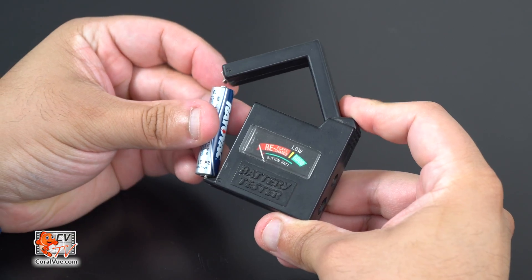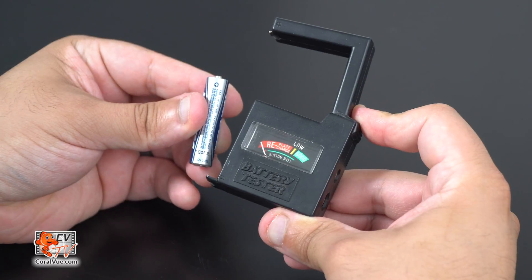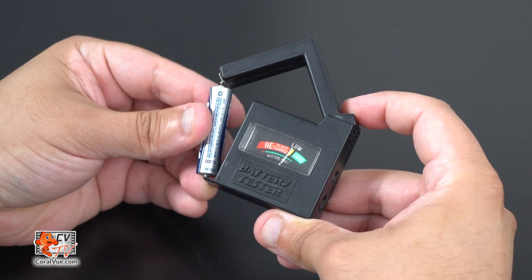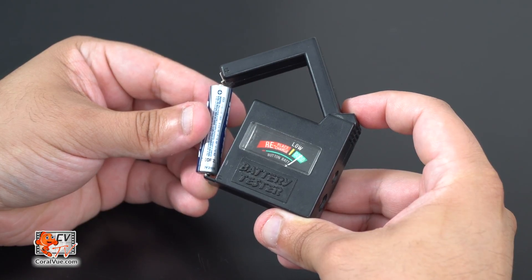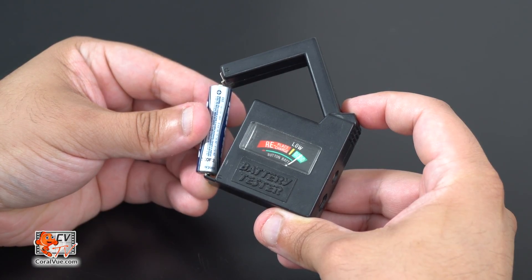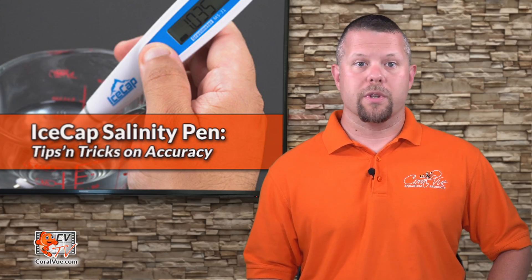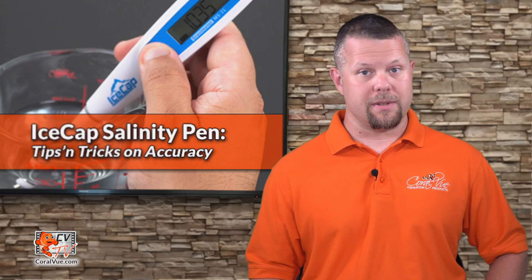A battery tester is a very inexpensive yet useful way of monitoring the life of your batteries for all your household devices. It will allow you to easily test the power left on the battery and replace it if needed. Charged batteries will ensure that the pen is accurate on a consistent basis.